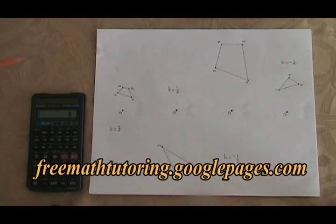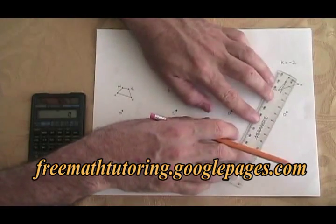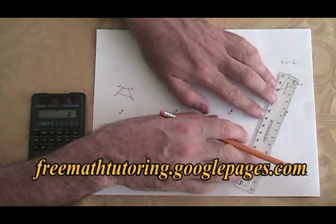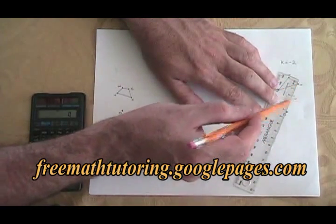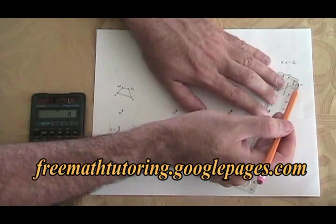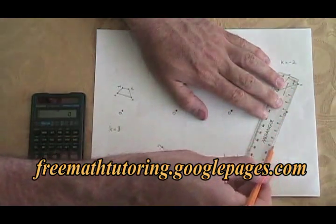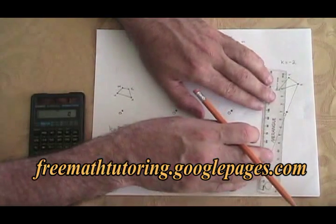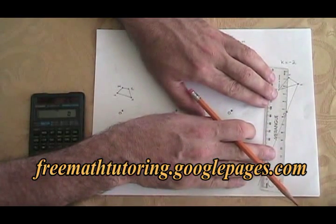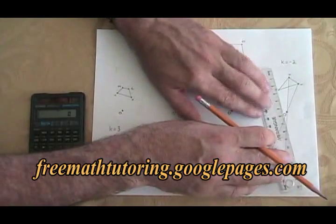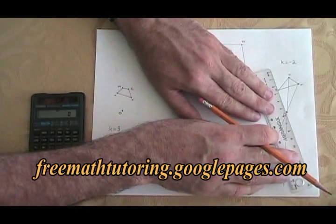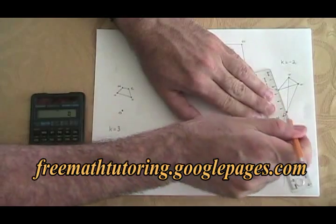Now, how do we draw these? We start with a ruler, and I'm going to start by showing how to draw the negative size transformations first. You line up your ruler at one of the vertices of the original drawing, make sure the edge of the ruler goes through the zero dot, and then draw a line from the original vertex through the zero dot, and keep going. You do this with all of your vertices — from the original vertex through the zero dot, and keep going.